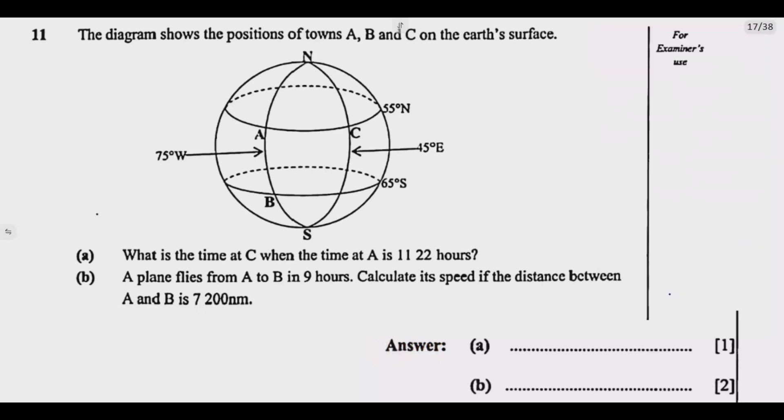So first thing first, let us understand the question. What's the question on A? If you look at question A, it's asking us to find the time at C. We're given the time at A. If you notice, we are moving along this latitude. So C is to the east.